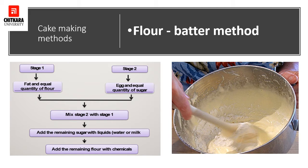The second method is the flour batter method. In this method, fat and a quantity of flour not exceeding the weight of the fat are creamed together. The fat should be in a smooth and plastic state and the flour should be added gradually. The whole mass is whipped until it becomes light and fluffy. Eggs and an equal quantity of sugar are whipped to a stiff froth, then added to the cream mixture of fat and flour. Although there is less risk of curdling, the egg mixture should be added in small portions, and after each addition it should be mixed thoroughly before the next portion is added. Any color is also added along with the liquid at this stage.